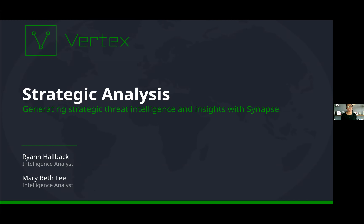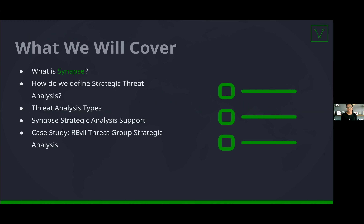Today, we're going to talk to you about strategic analysis, and what we want to do is demonstrate how you can use Synapse to perform strategic threat analysis and help you generate some strategic intelligence. First, we want to give you a brief overview of Synapse, then cover how we define strategic threat intelligence here at the Vertex Project, cover the three main types of threat analysis, and cover how Synapse can support your strategic analysis needs. We'll finish up with a case study where MB and I did some strategic analysis on the REVIL threat group.